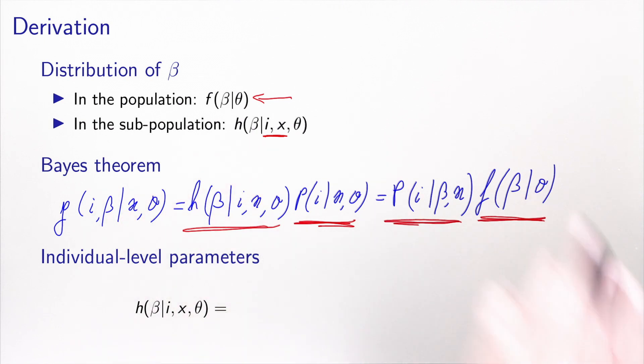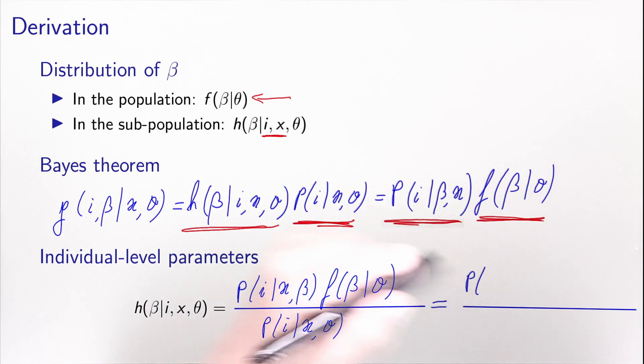So if I used all this specification, I can write the distribution of beta in the subpopulation as p of i given x and beta times f of beta given theta divided by p of i given x and theta. So what is this? So the numerator is the same. So I have the kernel, which is a logit, the density of beta.